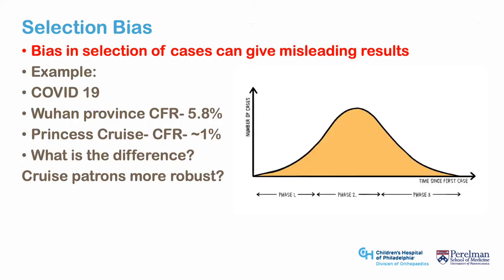Selection bias. Bias in selection of the population may result in a non-representative sample, which can lead to misleading estimates of outcome. A recent example can be seen with the COVID-19 pandemic. In Wuhan province, the case fatality rate — the percent of patients with a positive test who died from the infection — was reported to be around 5.8 percent, although later revised down. However, a captive audience on an early cruise ship infected with the virus had a case fatality rate of around 1 percent despite having an older population.